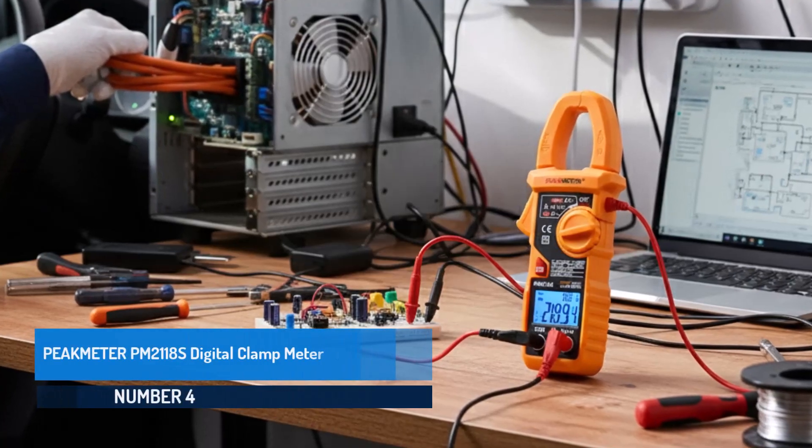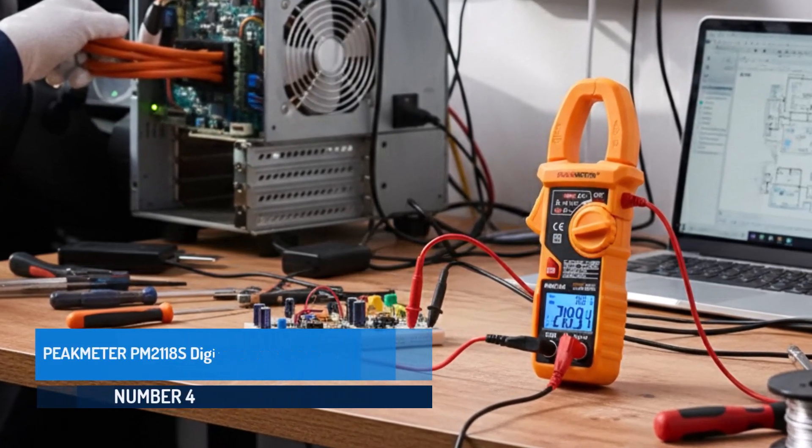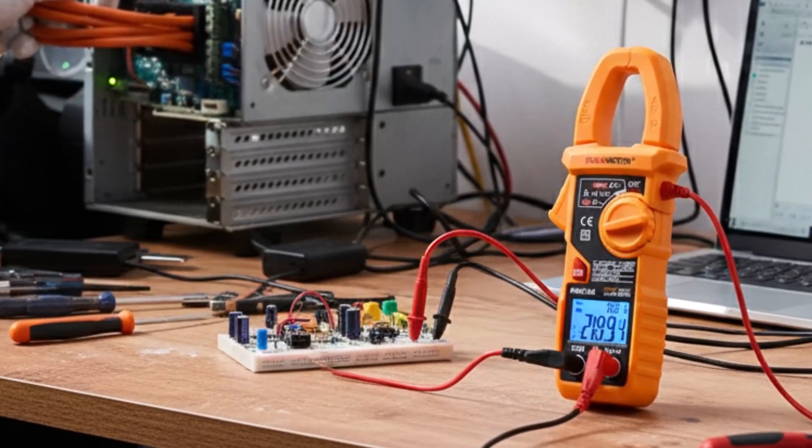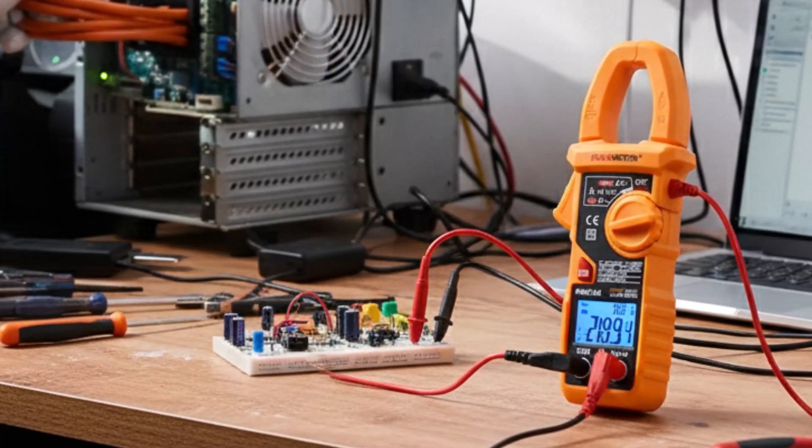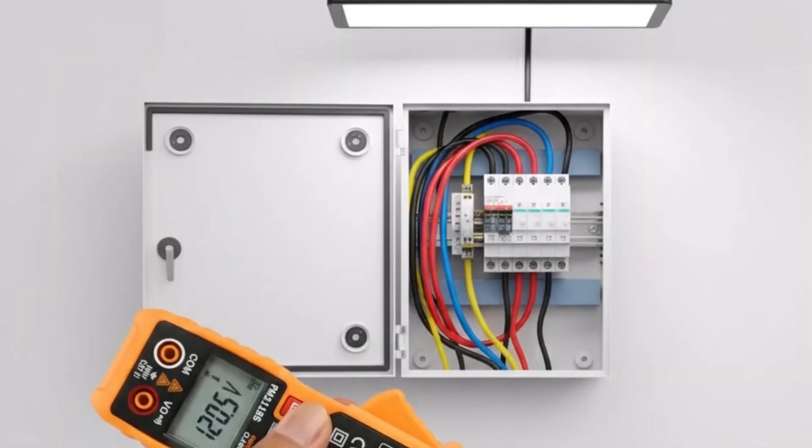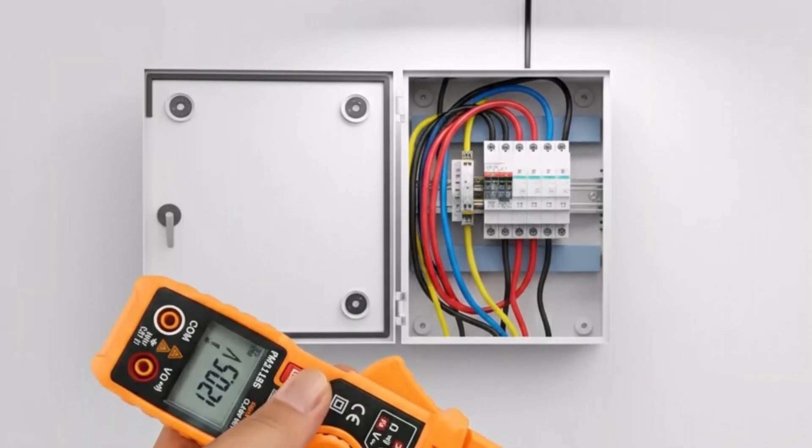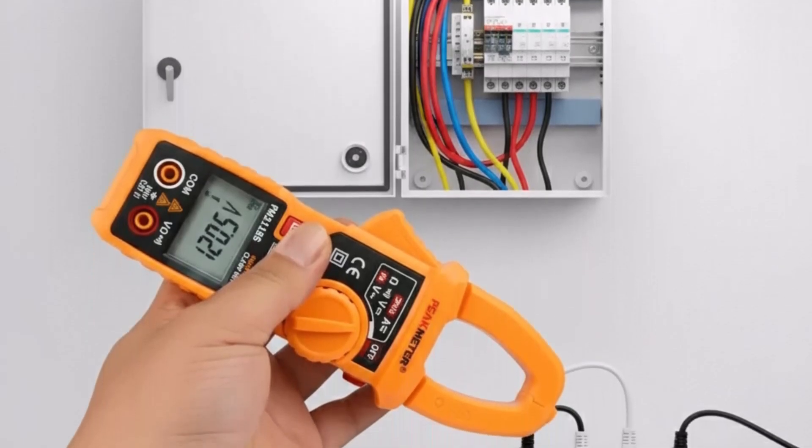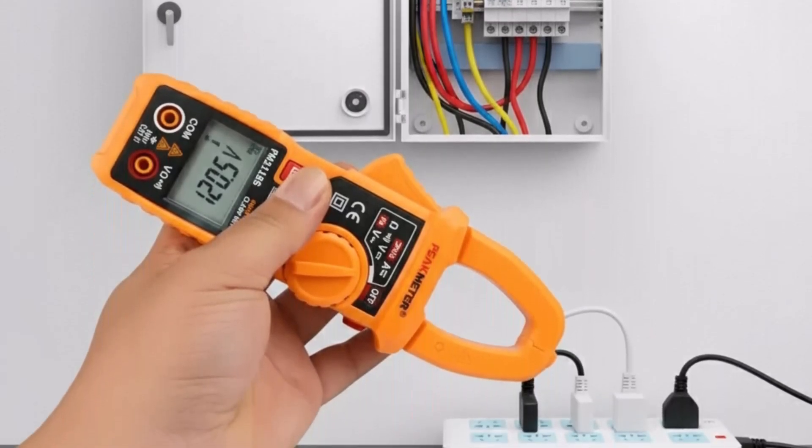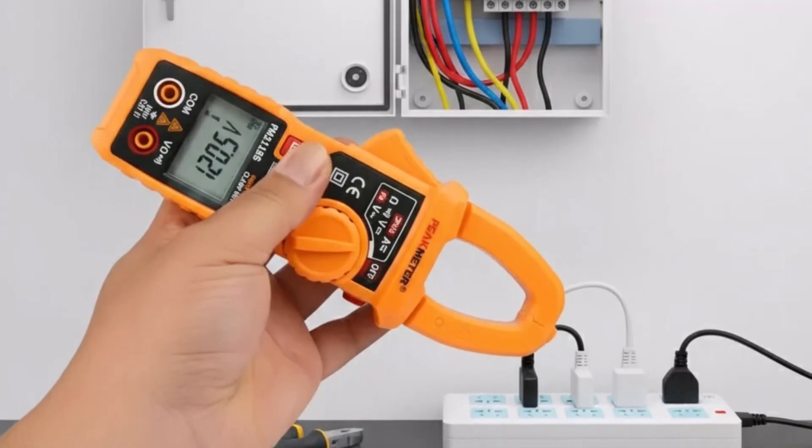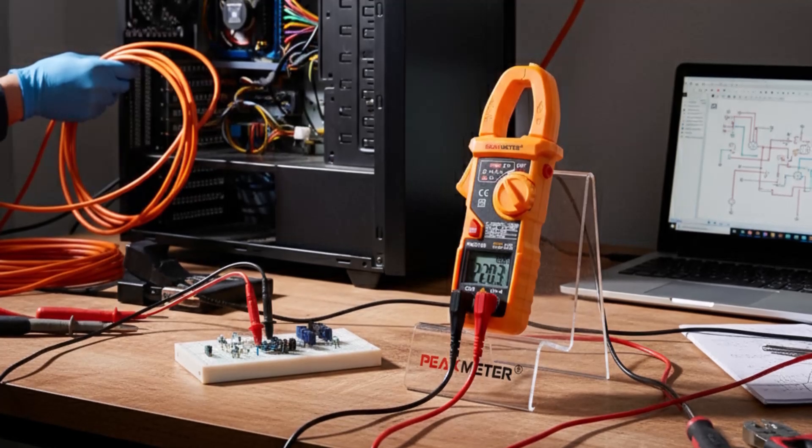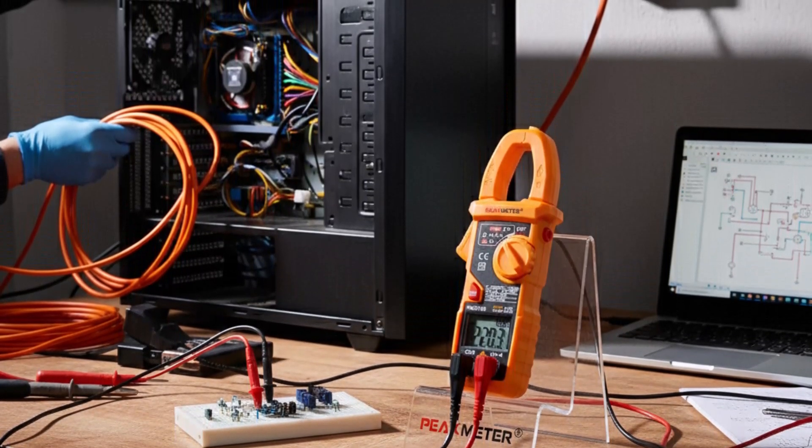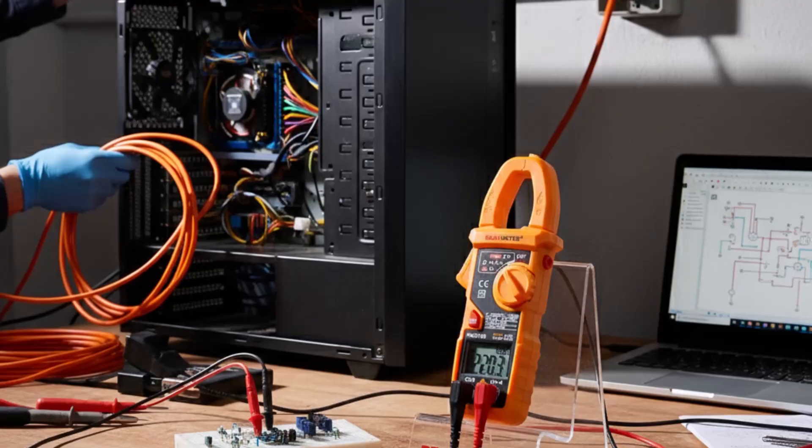Number 4. Peak Meter PM2118S Digital Clamp Meter. The Peak Meter PM2118S Digital Clamp Meter is a practical and smart measuring instrument offering both AC and DC current testing in a compact body. It can detect AC voltage accurately from 1.0V to 600V and automatically classifies readings into three voltage levels, making it convenient for quick diagnostics.